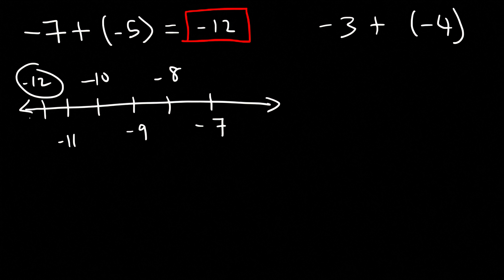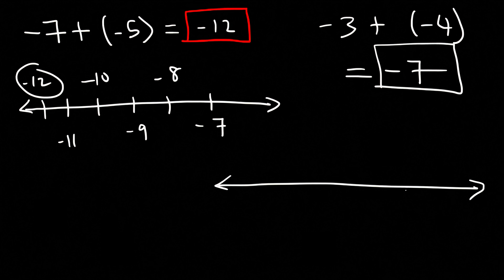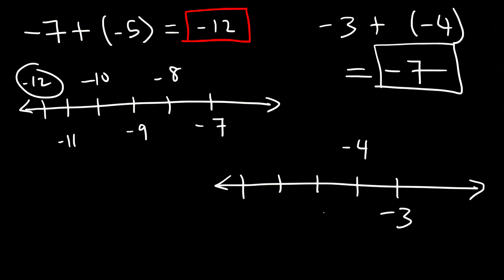If 3 plus 4 is positive 7, then negative 3 plus negative 4 is negative 7. Starting with negative 3 and traveling four units to the left on the number line: negative 4, negative 5, negative 6, negative 7.